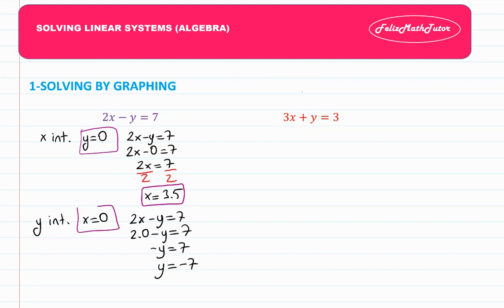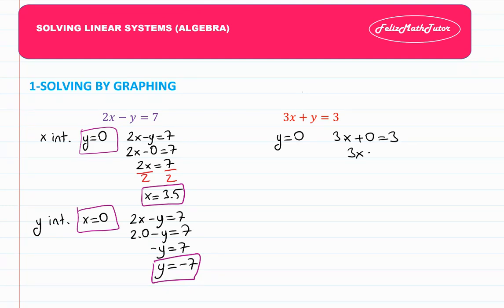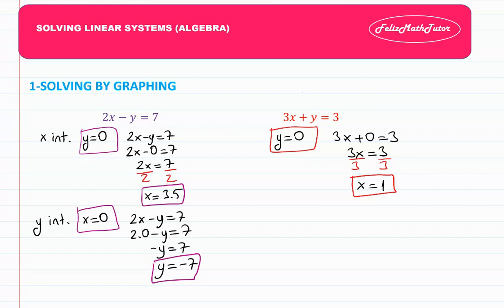I find the y-intercept like that. For the red equation, setting y equals 0: 3x plus 0 equals 3, so 3x equals 3. Dividing by 3 gives the x-intercept.